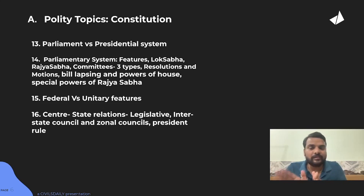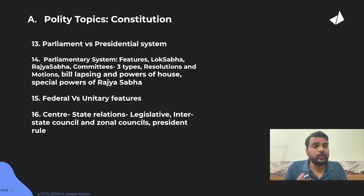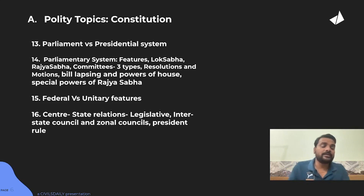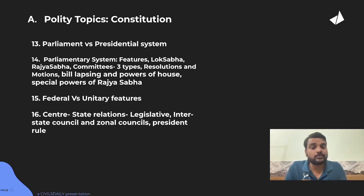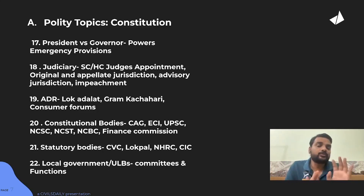Federal and unitary features: what are the features that make India federal and what makes it unitary. Then the central-state list — in which conditions the centre can impose Presidential Rule, not only based on the Governor's report but also under Article 365 if a state fails to follow the guidance or direction of the centre. What are the major areas where Parliament can legislate on state topics? Within constitutional-judicial topics, cover President versus Governor, their legislative, judicial, and executive powers, and emergency provisions related to all three types of emergency.